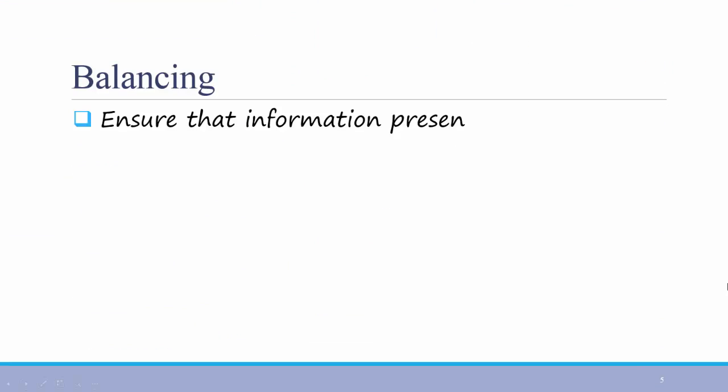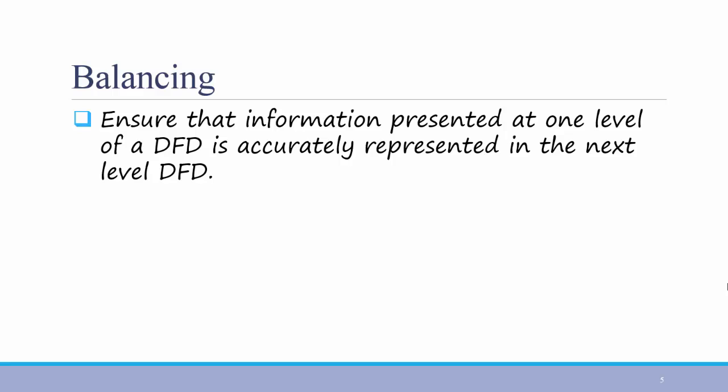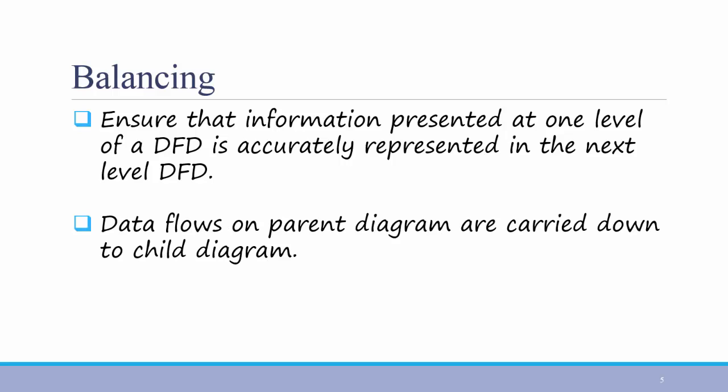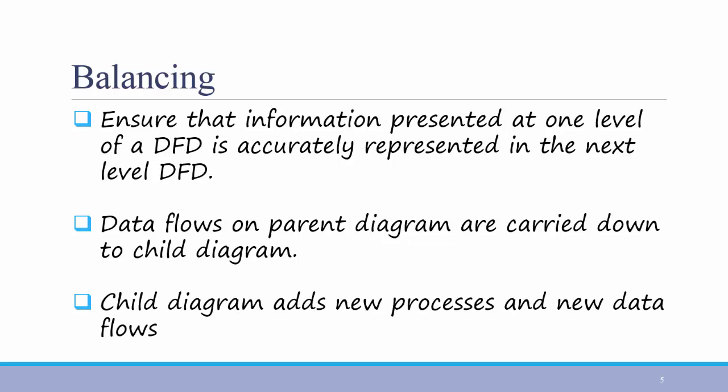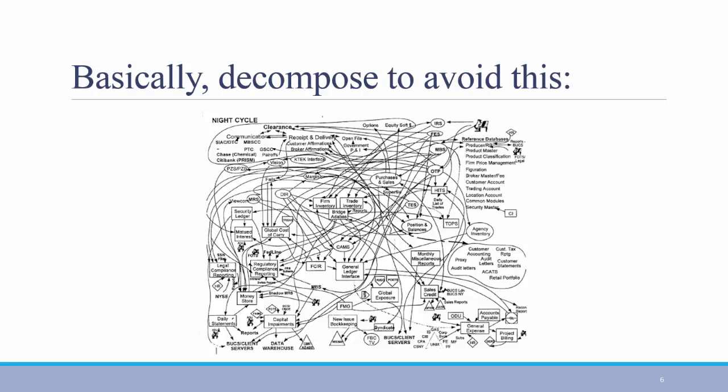It's important to ensure that information presented at one level of a DFD is accurately represented in the next level. Data flows on parent diagrams are carried down to child diagrams. Child diagrams just add new processes and new data flows. At the end of the day, you want to have a set of complete data flow diagrams where you can refer back and forth to get more detail and information instead of trying to include everything on one diagram like this.